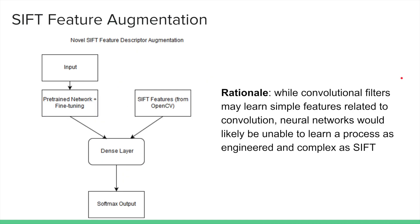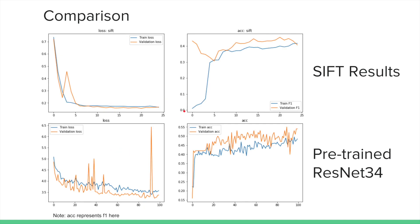I also created a novel architecture combining traditional computer vision techniques. Before the final output layer, I concatenate the second-last layer with a SIFT feature descriptor computed by OpenCV. Here, we compare the results versus our best-performing network. The SIFT results were not as good as the best network, most likely due to fewer epochs of training.